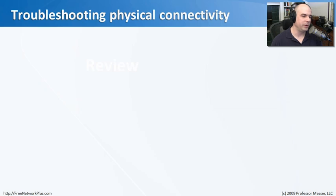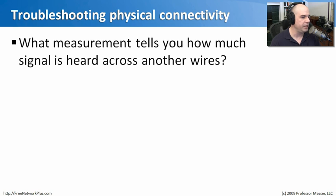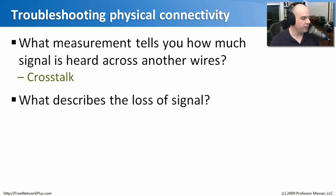Let's find out how much we've learned about troubleshooting the physical connectivity on our network. Our first question, what measurement tells you how much signal is heard across other pairs of wires? It's one of the first things we talked about, and that's called crosstalk. You'll also hear it measured as near-end crosstalk. Also, we have a question, what describes the loss of signal? When signal's going through a wire, it will lose signal as it goes along, and we describe that as being attenuation.